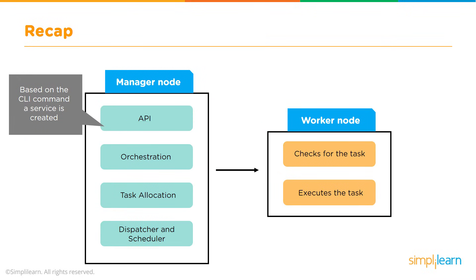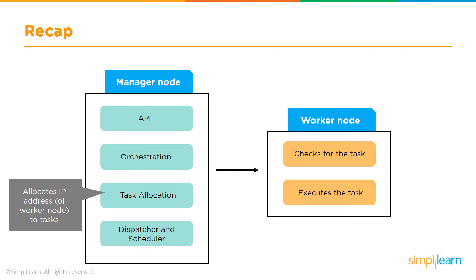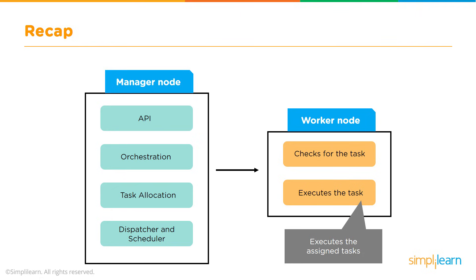To recap: we have a command line interface to create and connect via APIs, and those APIs allow us to do orchestration via tasks and services. Task allocation assigns work via IP address so nodes can execute it. Worker nodes must connect to the manager to check for incoming tasks, maintaining consistent communication across the entire Swarm. The final stage is executing the tasks assigned from the manager node to the worker node for a successful outcome.